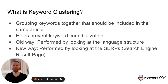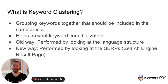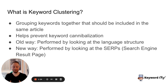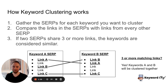The old way of keyword clustering was to look at the different words in the keyword itself and group keywords that way. The new way of keyword clustering, however, is by looking at the search engine result pages — also known as a SERP — and comparing the links. I'll show you how that's done.